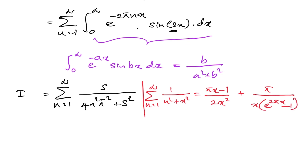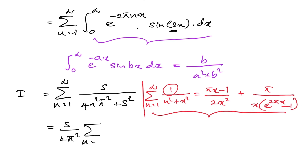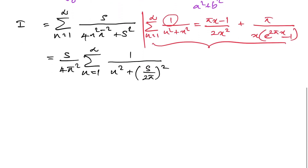To apply this sum, the numerator must be 1. Before applying, we rearrange our sum by factoring out s over (4π²), so we have s over (4π²) times the sum from n=1 to infinity of 1 over (n² + (s/(2π))²).